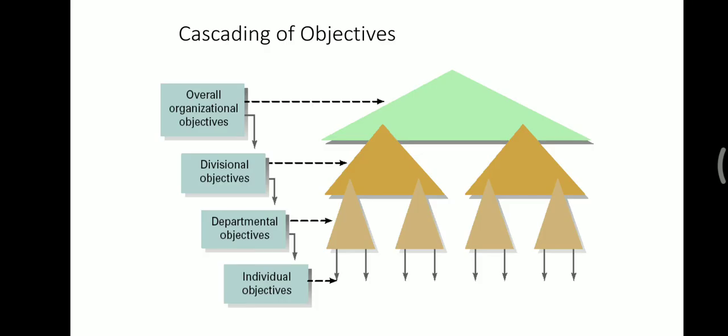The cascading of objectives shows the structure: first is the overall organizational objective, set by top management. Below that are divisional objectives, handled by middle managers. Then departmental objectives, managed by line managers. Finally, individual objectives — each worker has their own objectives for the achievement of the organization's goals. That concludes this section.